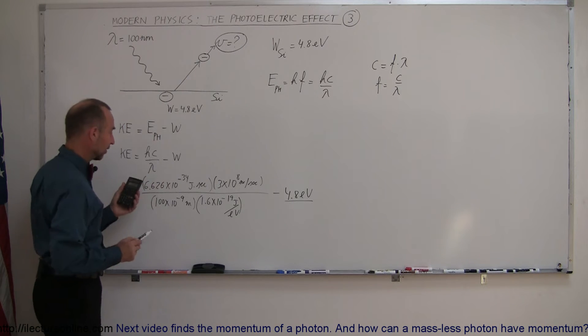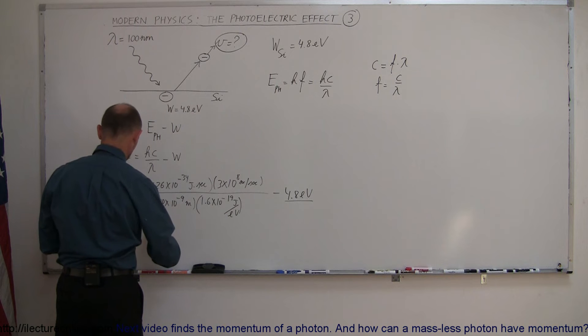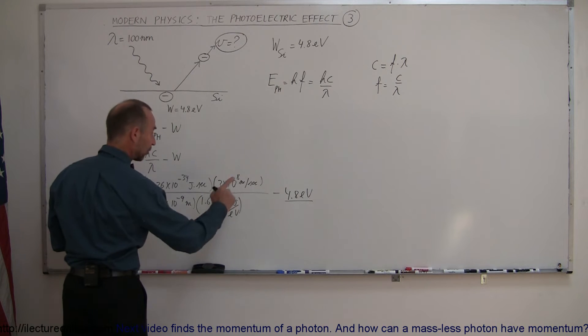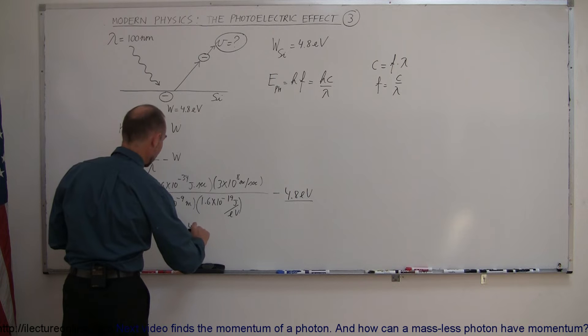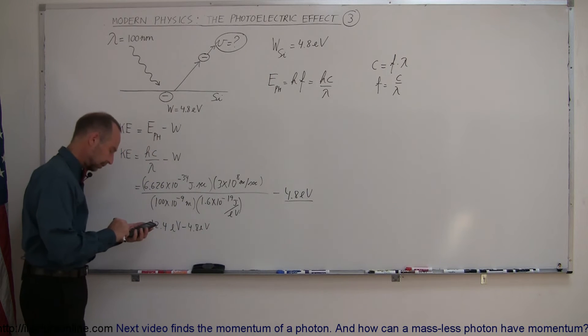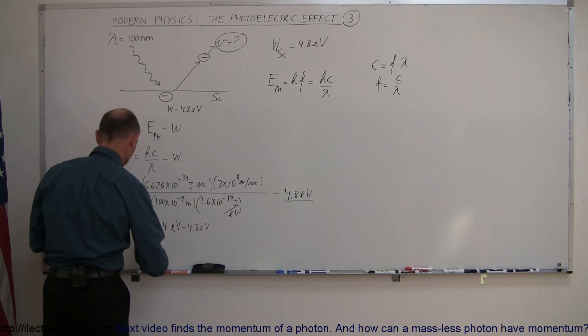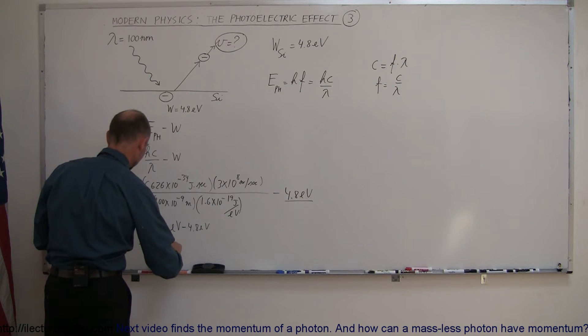And it looks like this gives us quite a bit of energy, 12.4 electron volts. Subtract from that 4.8 electron volts.